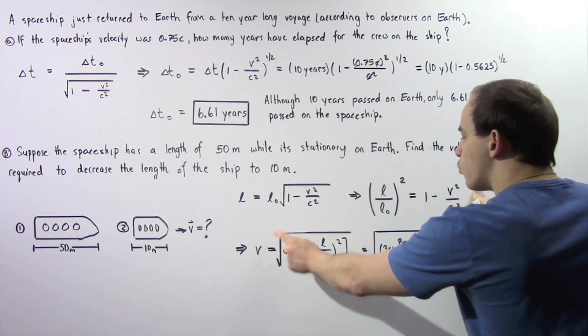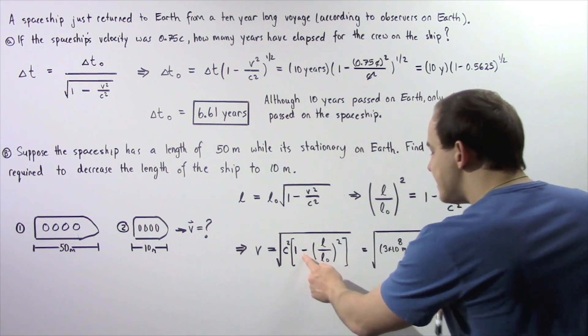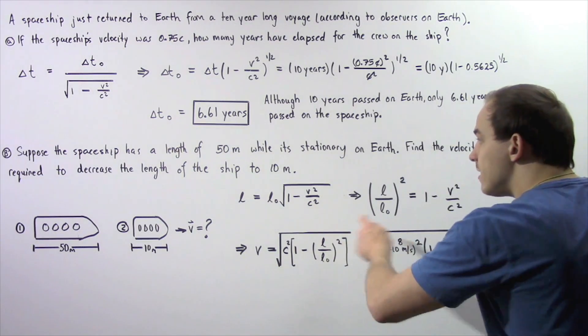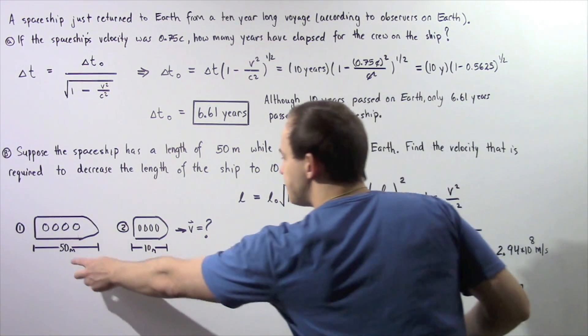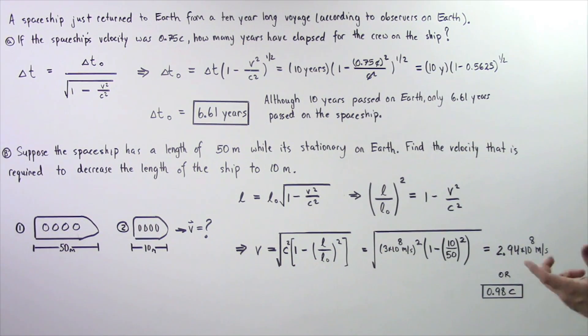V is equal to the square root of C squared multiplied by 1 minus L divided by L0 squared, where L is our 10 meter length, L0 is the 50 meter length, and C is the speed of light in a vacuum.